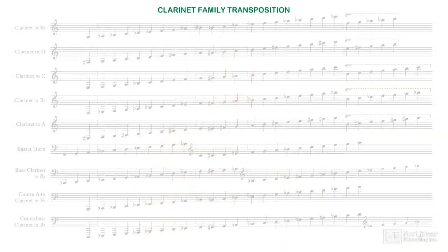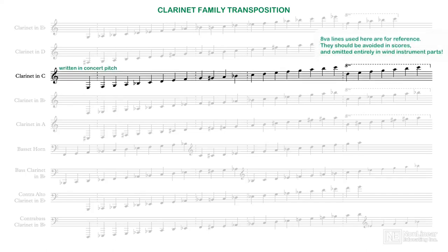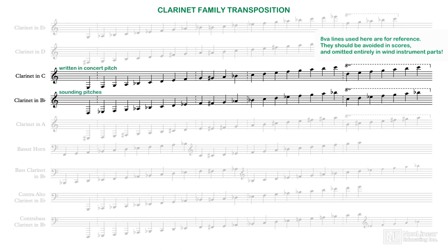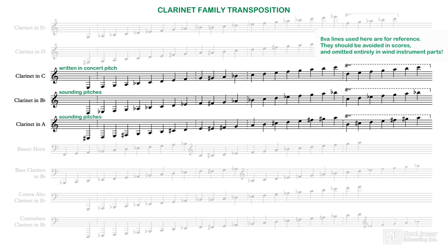Up to now in this video lesson, I haven't yet mentioned transposition. While some classical period clarinets were built in C, the most common model today is the B-flat clarinet, used prolifically in concert, band, and popular music. Its partner in concert music playing is the A clarinet, mostly used for the ease of fingering passages in sharp keys. We'll discuss these two instruments in a few videos, and how to know when to score each model.